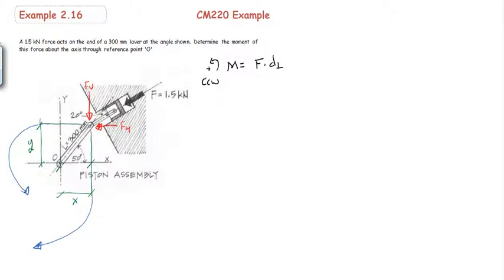So our moment will equal Fh times y, and that's going in a positive or counterclockwise sense so that will be plus, and F vertical times x, and that's going in a clockwise or negative sense so we'll end up subtracting that value. So that will be what we're going to solve here.